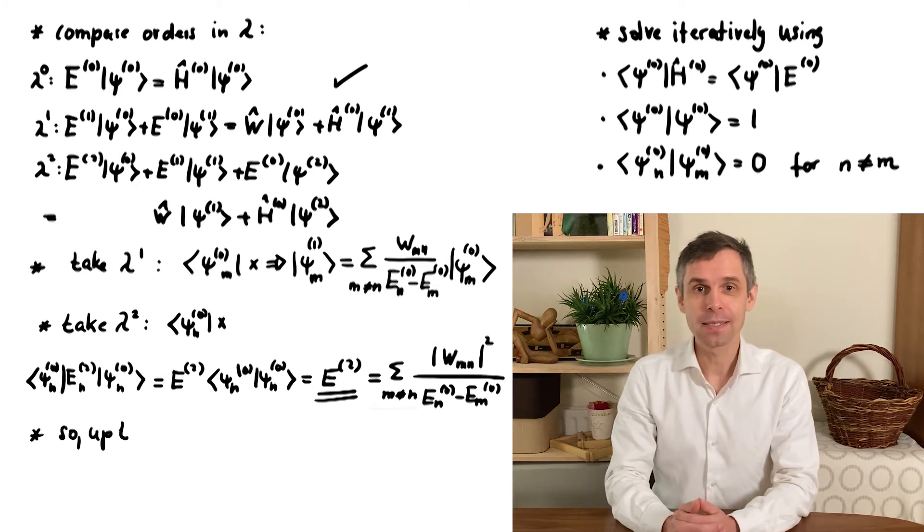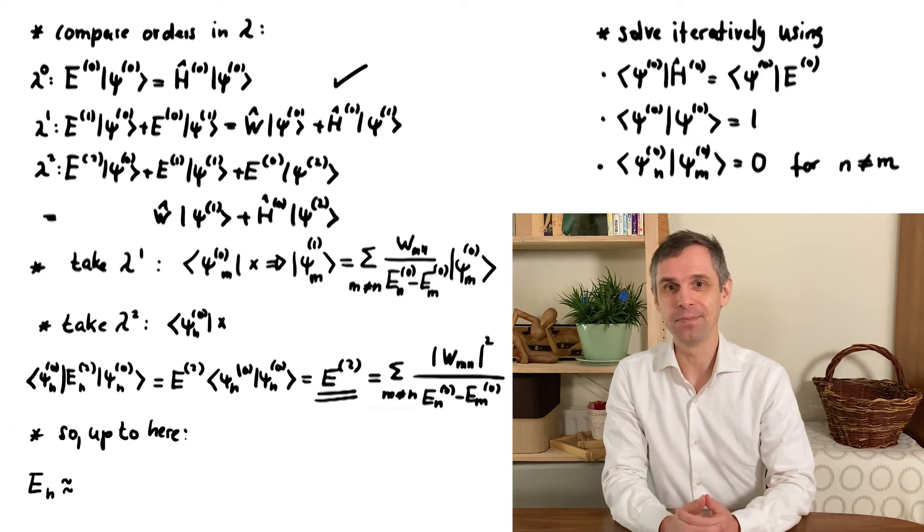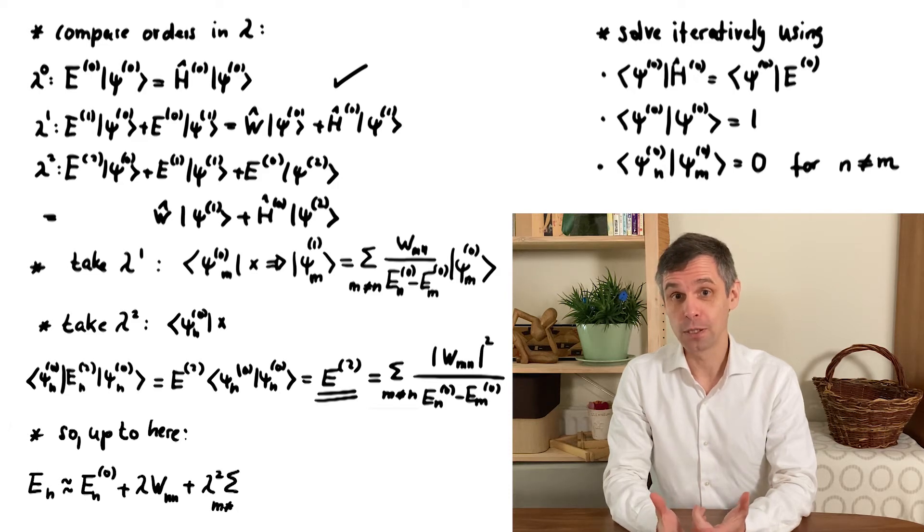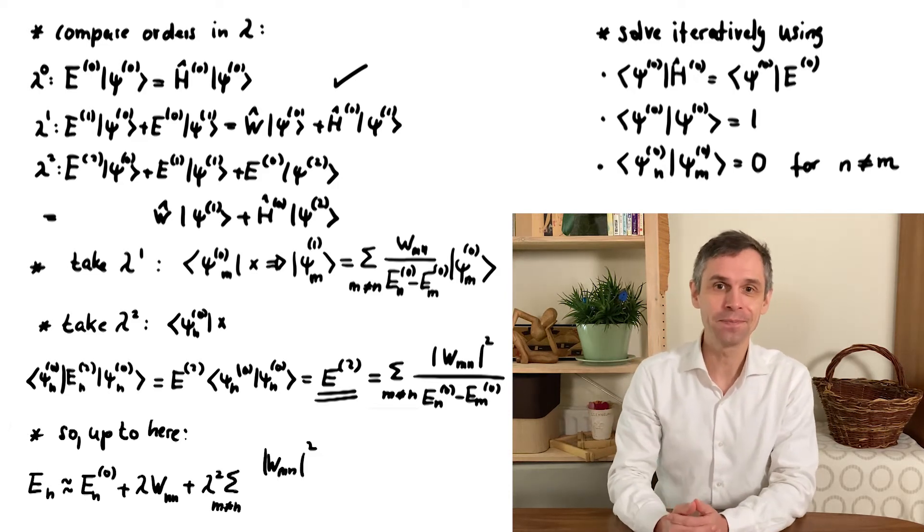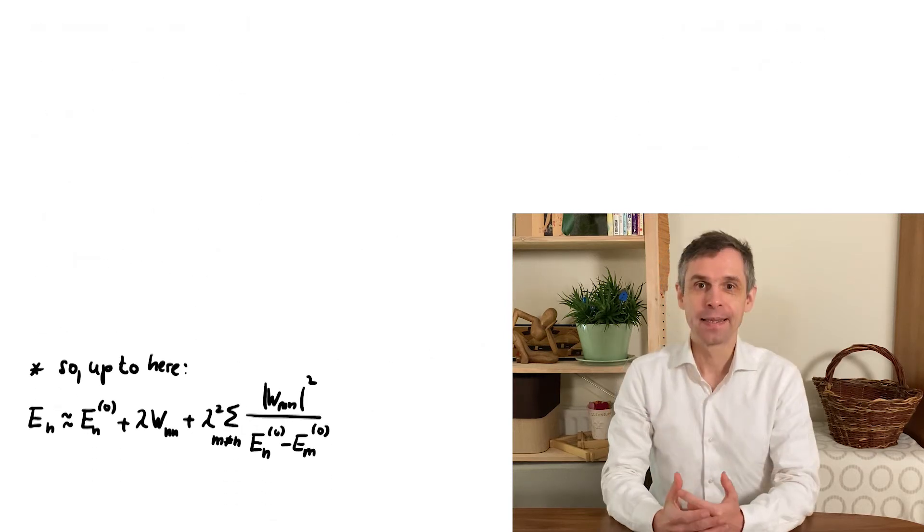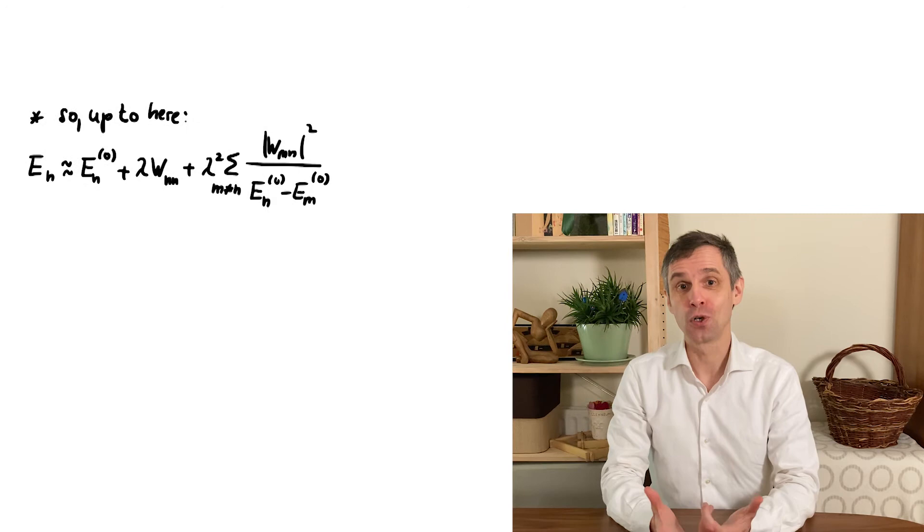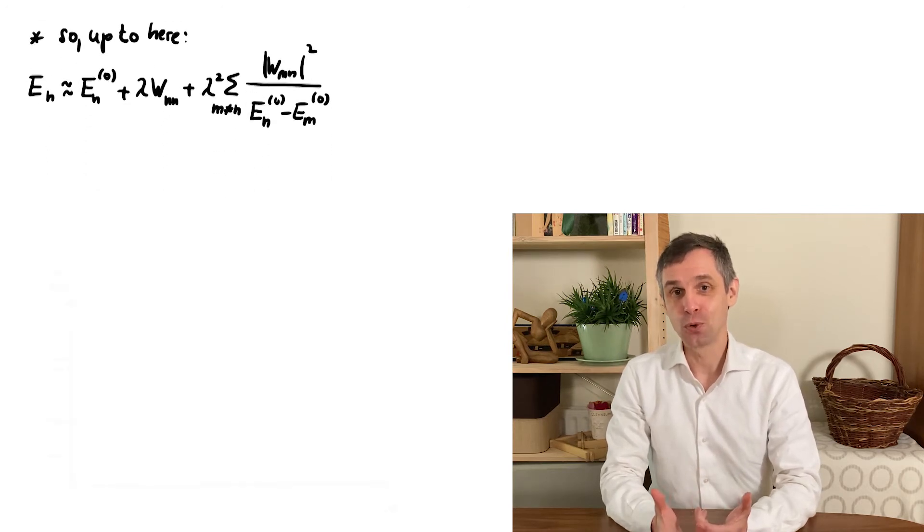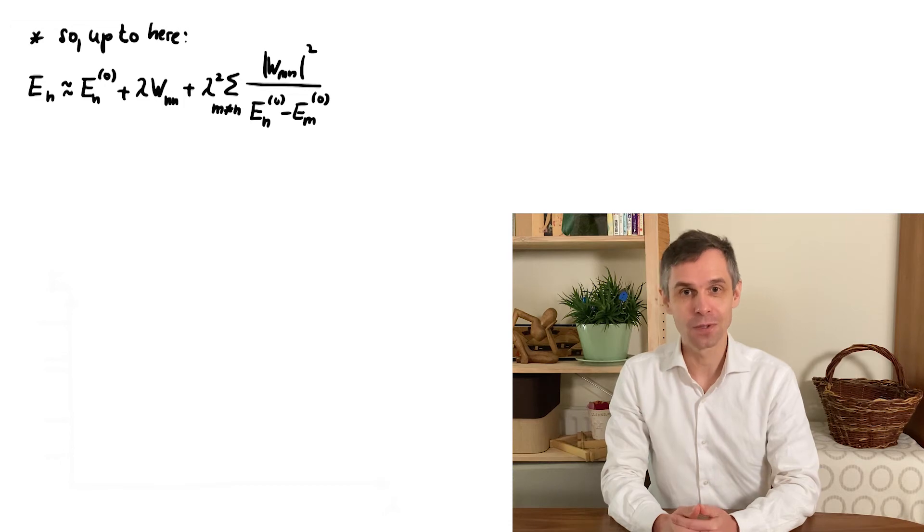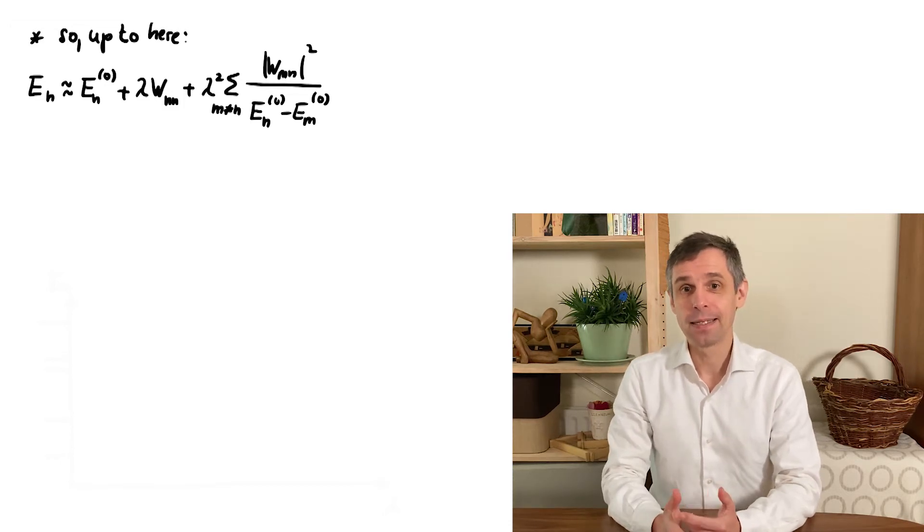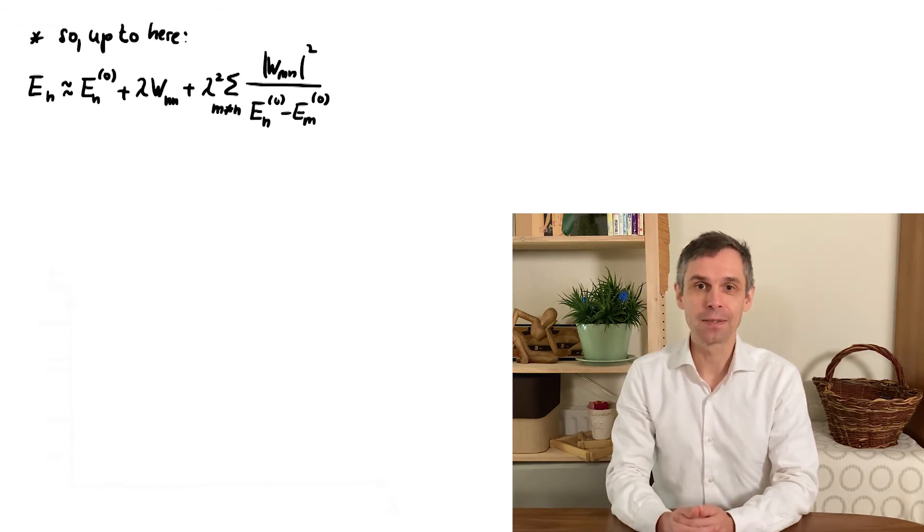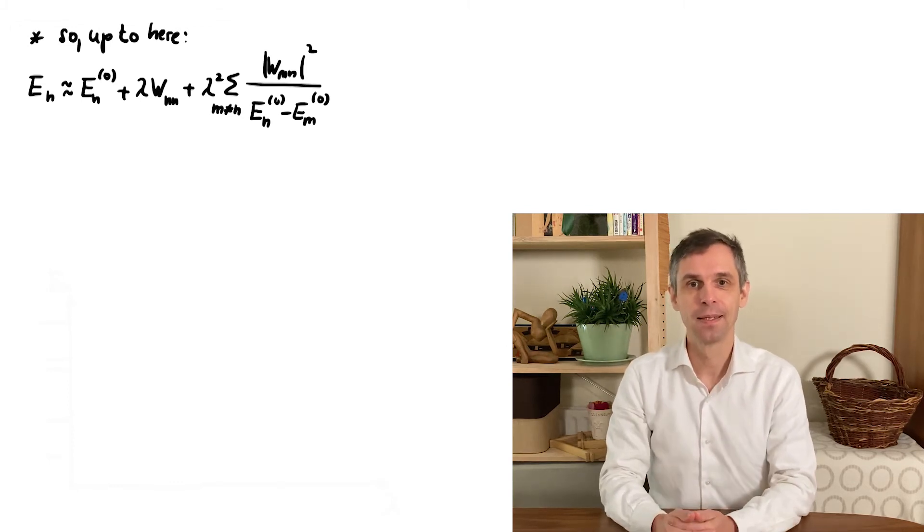Let us collect our results and write down the approximation of the energy up to second order in lambda. Now that we have introduced the perturbation matrix, we can use this also in the first-order term. There you see that it enters with a diagonal element. That's a relatively compact expression which is quite useful for calculations. As I mentioned, you often only use the first-order correction here, which only involves a single state and whose interpretation as an expectation value is physically transparent. But there are quite a few places where you would also use the second-order term, especially if the first order vanishes. And I will illustrate this result for calculation in the next example.